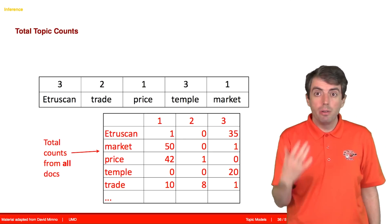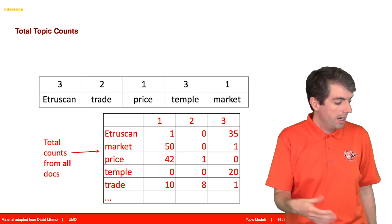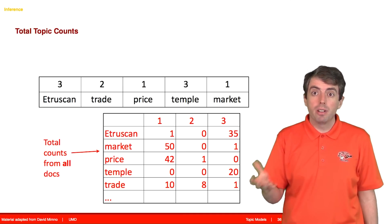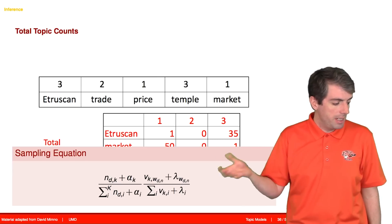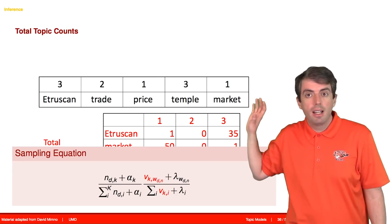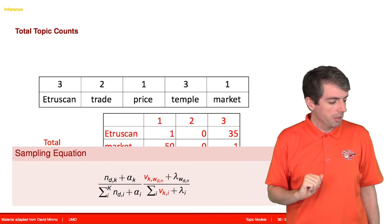So this is saying, in topic 1, the word Etruscan was used once, and in topic 3, the word Etruscan was used 35 times. So this corresponds to the V that I showed you before, how much the topic likes particular words.